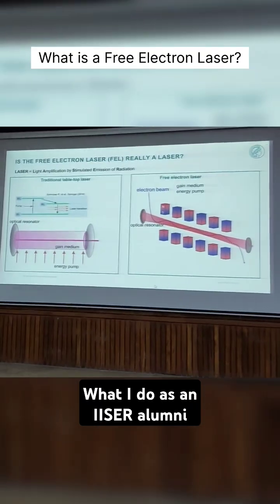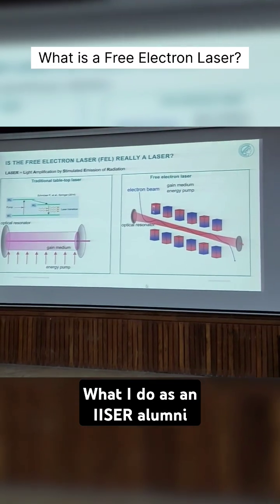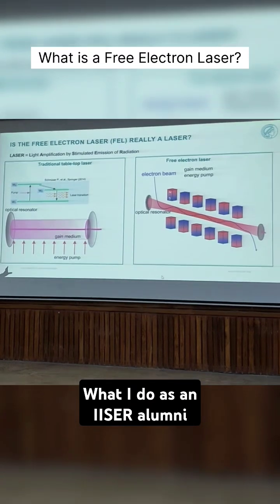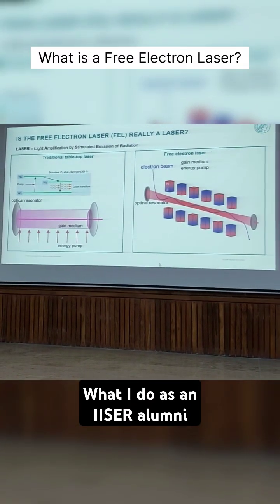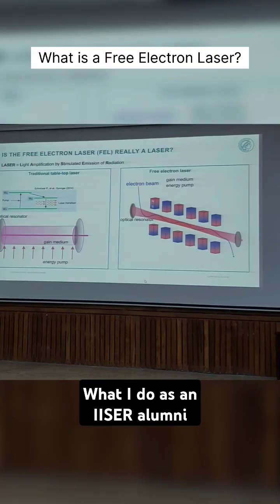So this is where the free electron laser comes in. And in this laser we change the laser transition level, like the gain medium, with a system of relativistic electrons in a particular magnetic structure to get the gain.